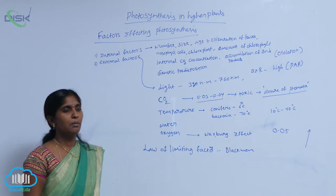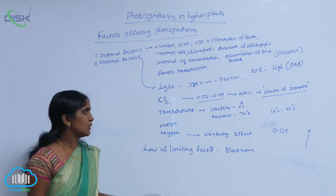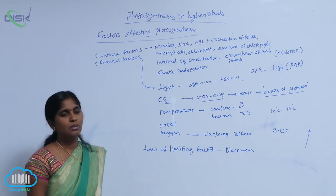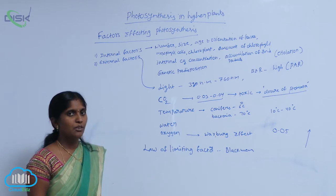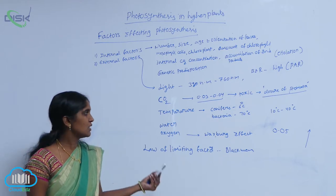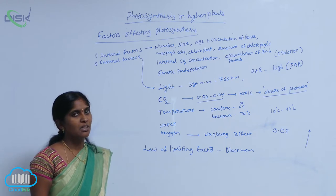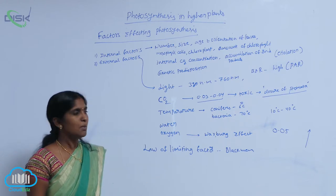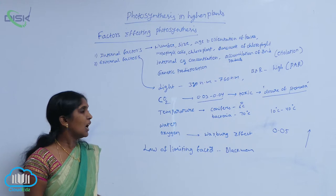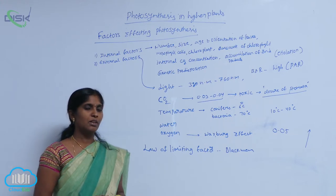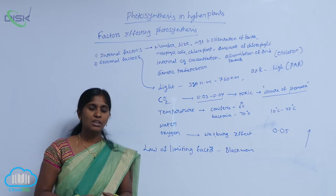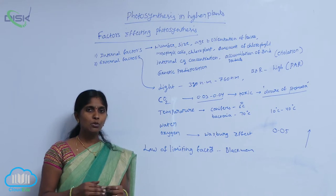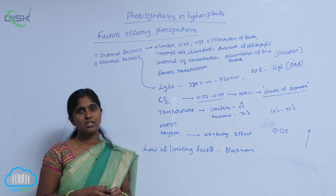A few bacteria — blue-green bacteria (BGB) — also conduct their photosynthesis at very high temperature, approximately 70 degrees. And every 10 degrees rise in temperature, the photosynthetic yield becomes twice.